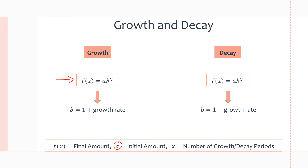If we want f(x) to grow exponentially as x increases, we want our b value to be greater than 1. So for growth, b is defined as 1 plus the growth rate, which can be given as a percent, decimal, or whole number.